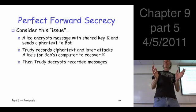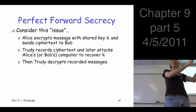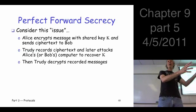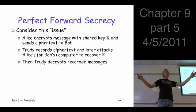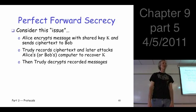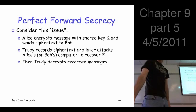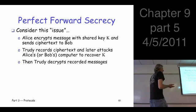The question is: could you prevent that kind of attack? Could you make it so that even if, sometime after the fact, Trudy breaks in and gets Alice's private key or whatever secret is used for authentication, she cannot go back and break the recorded messages? If you can achieve that, we call it perfect forward secrecy.